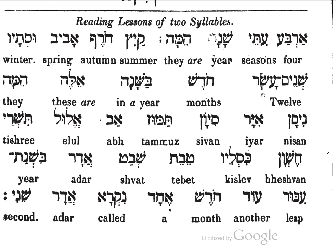Shneim Asar — 12. Shneim Asar. Chodesh — month. So Shneim Asar Chodesh: 12 of month. This is in the singular here. Bashana — in a year. Eile — these. So these are 12 months in a year.